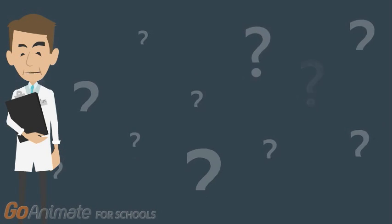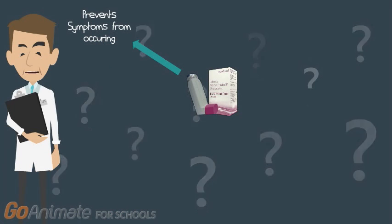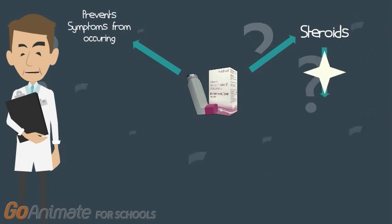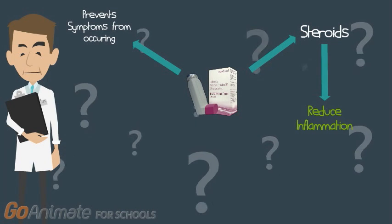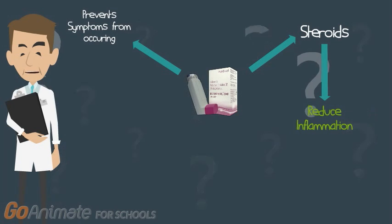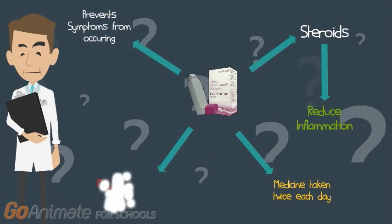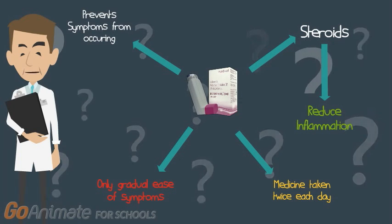The second type of inhaler is the preventer inhaler, meant to prevent symptoms from occurring. For people who have symptoms three times a week, this inhaler is recommended. The preventer inhalers contain the steroid medicine, which is used to reduce inflammation in the lungs, so that the airways are less likely to become narrow and inflamed again. These steroid inhalers are usually taken twice per day for people whose symptoms increase dramatically. One thing to remember is that preventer inhalers do not give immediate relief of symptoms. It takes about a week or more for symptoms to be reduced, and up to six weeks for maximum improvement.